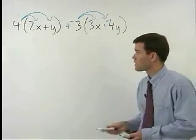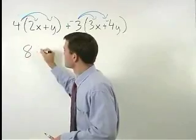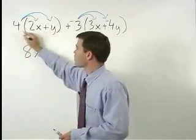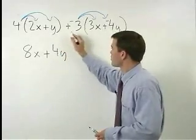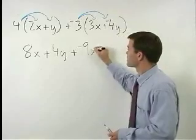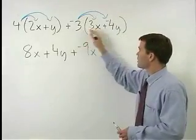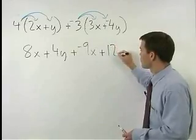That gives us 4 times 2x or 8x plus 4 times y or 4y plus negative 3 times 3x which is plus negative 9x plus negative 3 times negative 4y which is plus 12y.